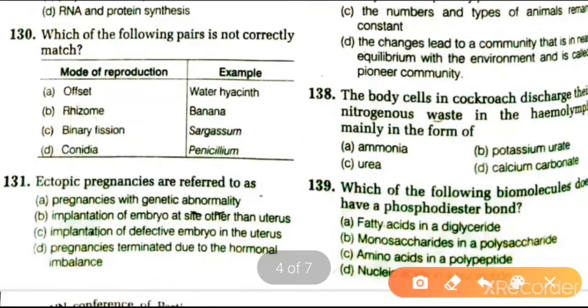Next question: the body cells in cockroach discharge the nitrogenous waste in the haemolymph mainly in the form of ammonia, potassium urate, urea, or calcium carbonate. The answer is potassium urate.